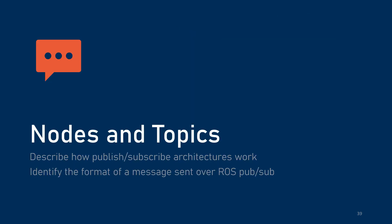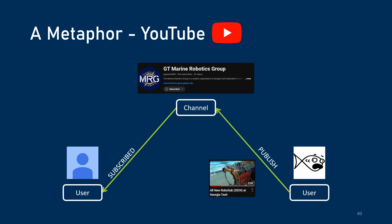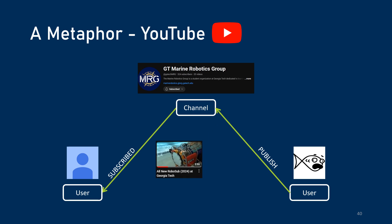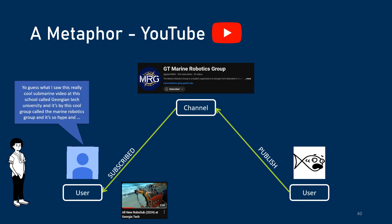Communication is a major component of what makes ROS useful, and nodes and topics are a big part of that. To understand how they work, we'll use a metaphor — specifically how YouTube distributes its videos. You might be subscribed to our YouTube channel, and there are several people who upload to it. If I come along with a new video and publish it to the channel, you're going to get a ping as a subscriber, see the video in your feed, watch it, and probably tell your uninterested friend about how awesome the marine robotics group is.